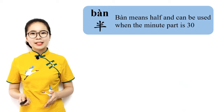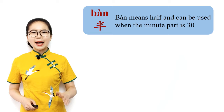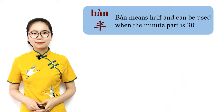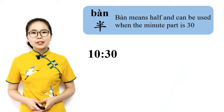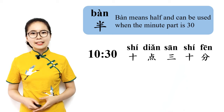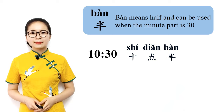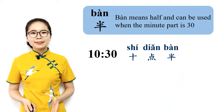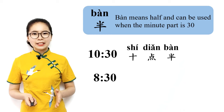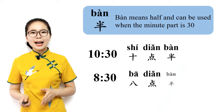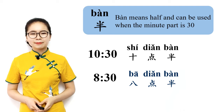Now let's have a look at a few special cases when telling the time. First, when the minute part is 30 minutes, we can use 半, which means half. For example, if the time is 10:30, you can say 十点三十分. Another way to say this is 十点半 — it's like saying half past 10 in English. Please repeat after me: 十点半, half past 10. If the time is 8:30, you can say 八点三十分 or 八点半. 八点半, half past 8.